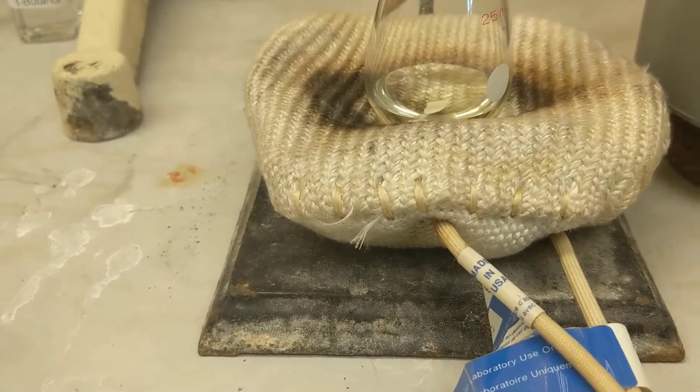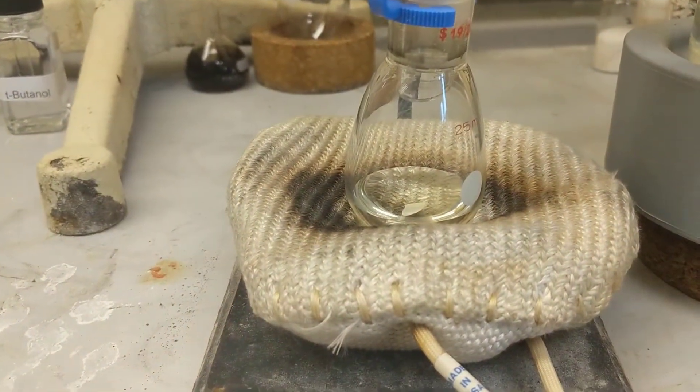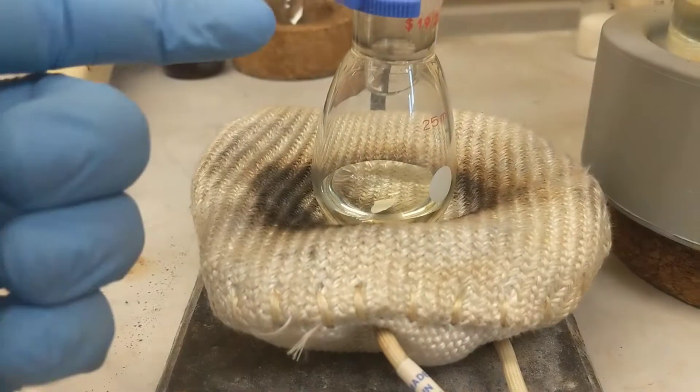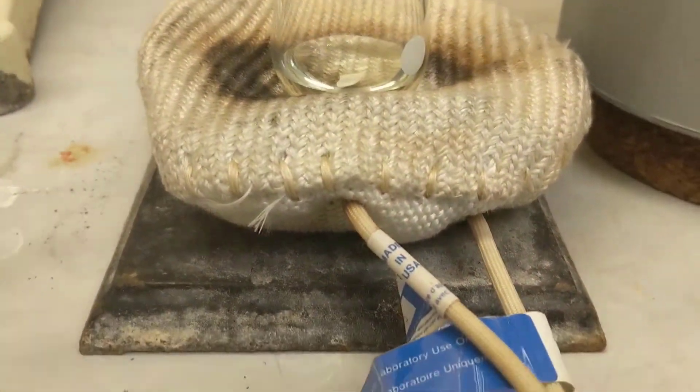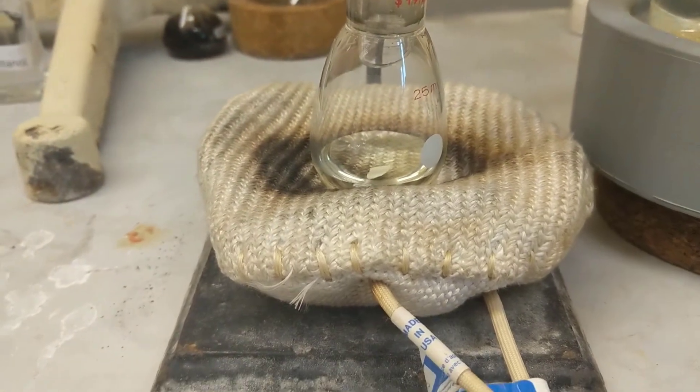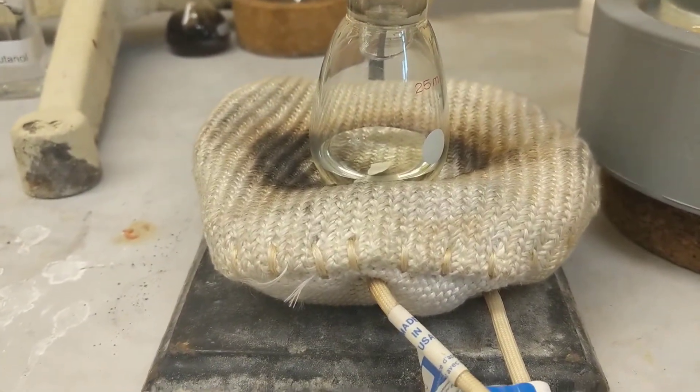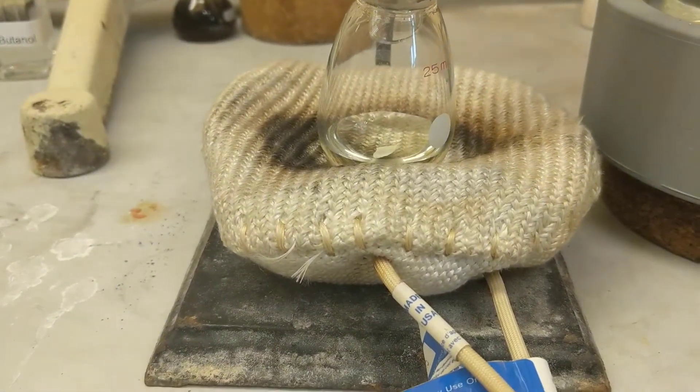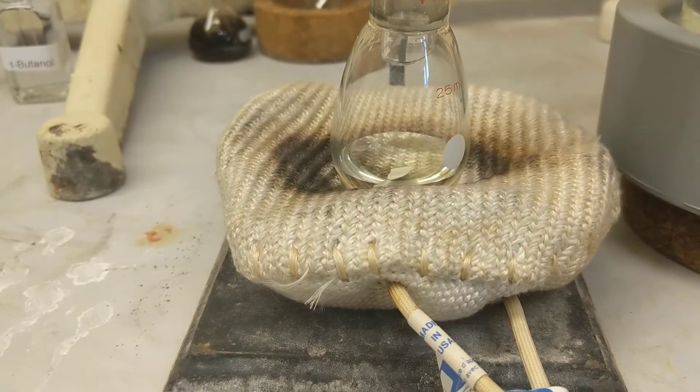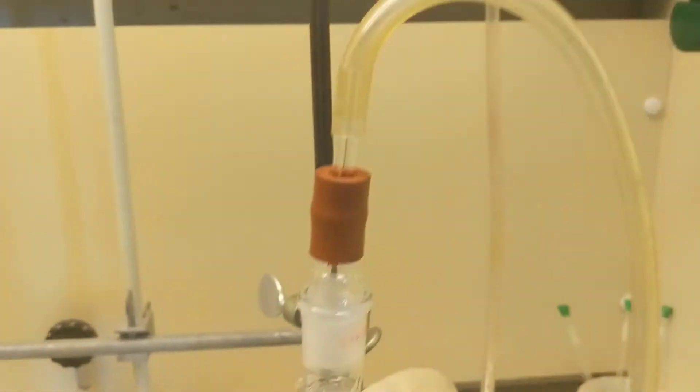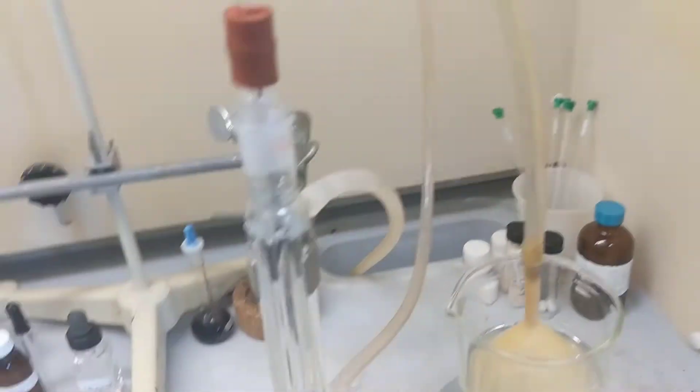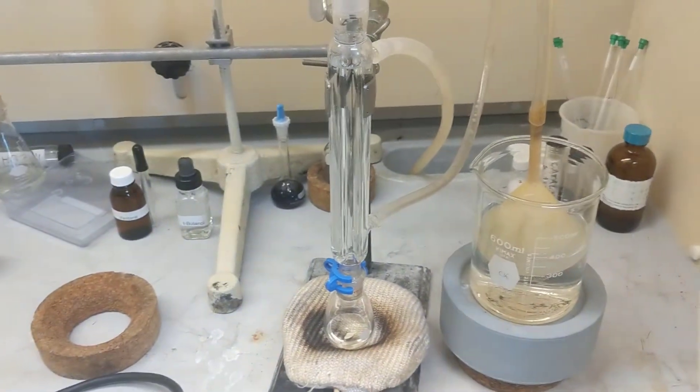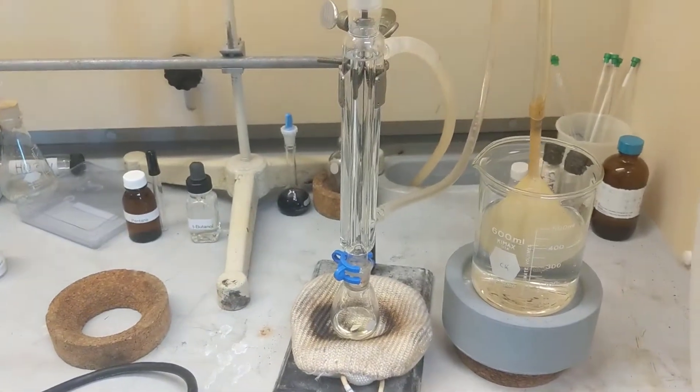I'm just going to heat this until I get it at a gentle boil. More important than that though, I want one drop of liquid condensing back down per second. When I get that, I start my timer and I do that for an hour. Make sure your apparatus is nice and tight. You don't want any halides leaking out. I'll get back to you when I get the rate I want.